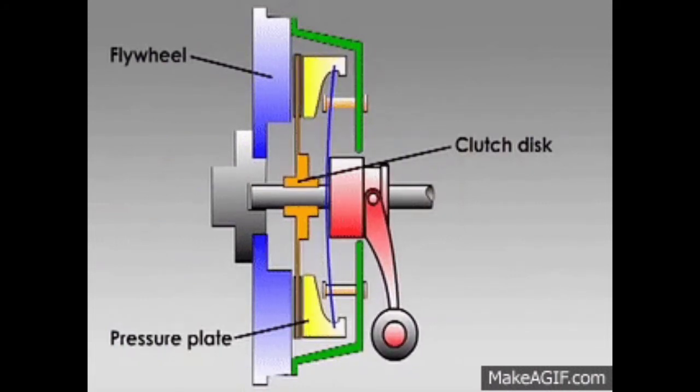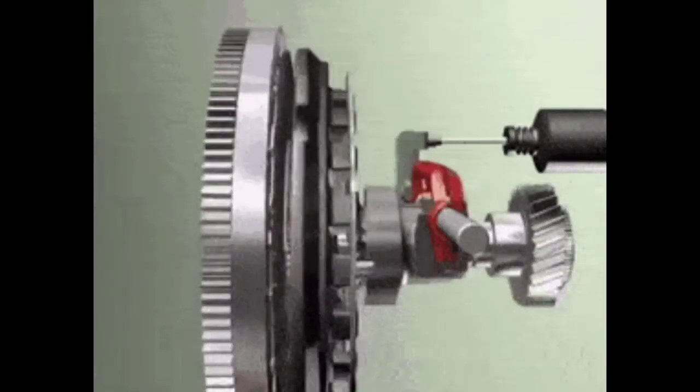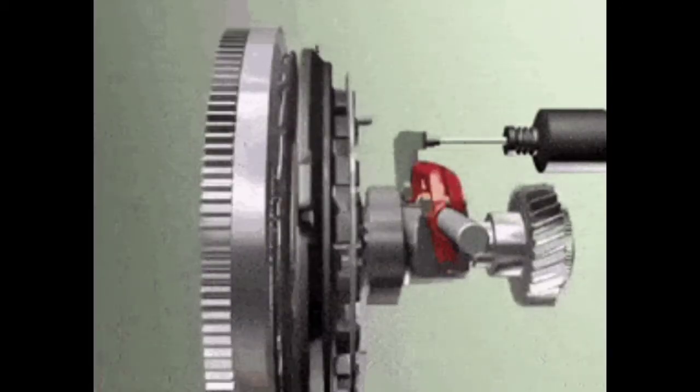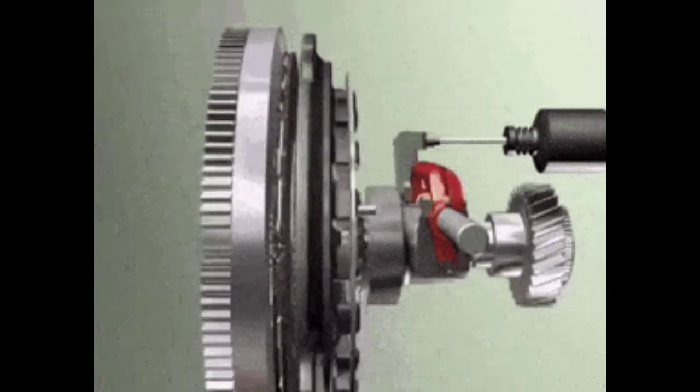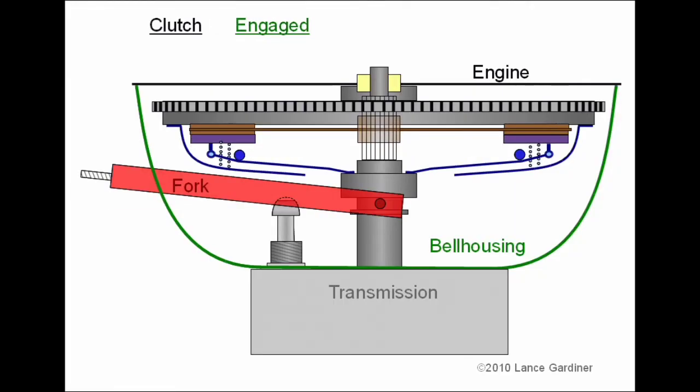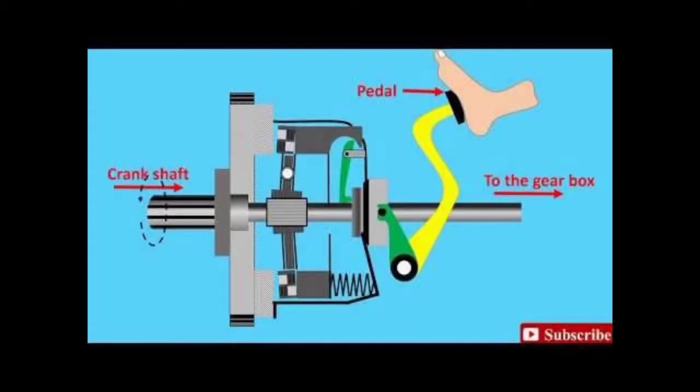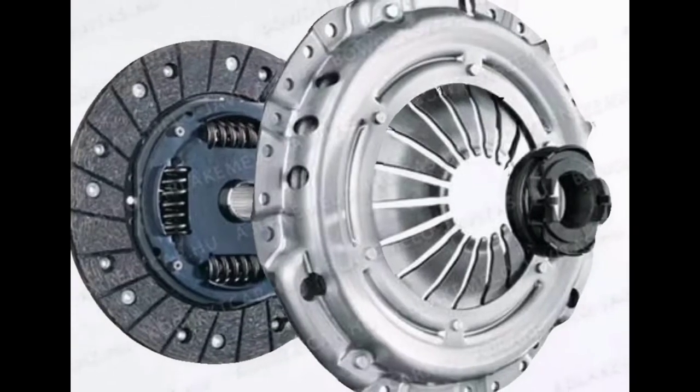In the simplest application, clutches are employed in devices which have two rotating shafts. In these devices, one shaft is typically attached to a motor or other power unit (the driving member), while the other shaft (the driven member) provides output power for work to be done.